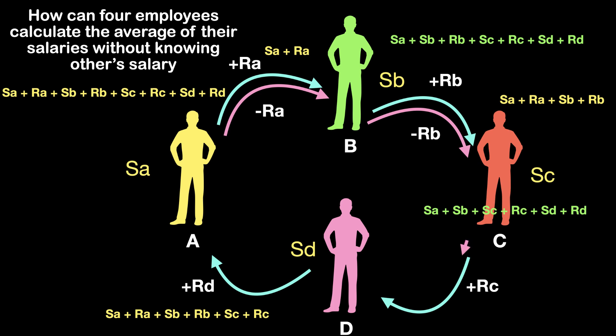In the next step, C does the same thing, that is C subtracts his random amount and gives the final figure to D without showing it to B. C will receive the figure Sa plus Sb plus Sc plus Sd plus Rd.